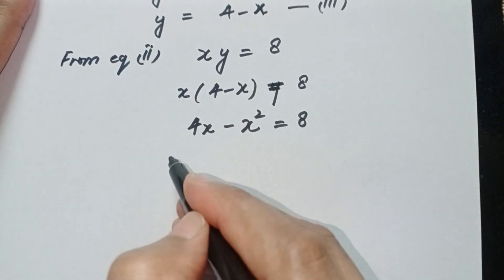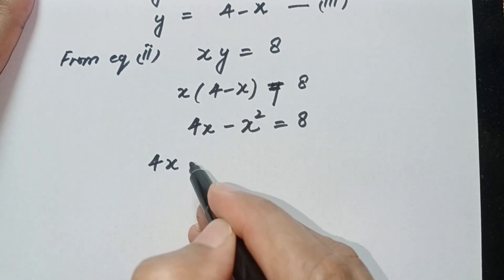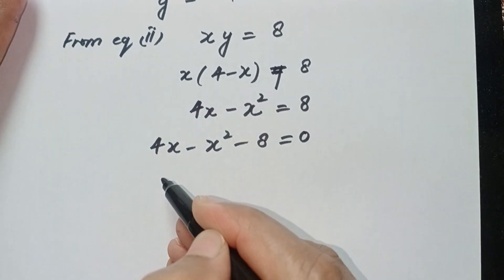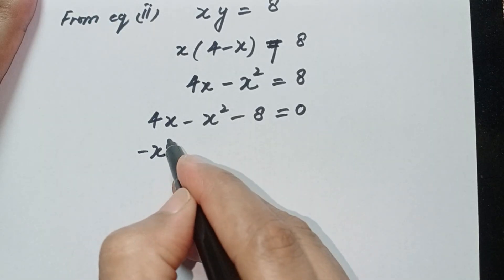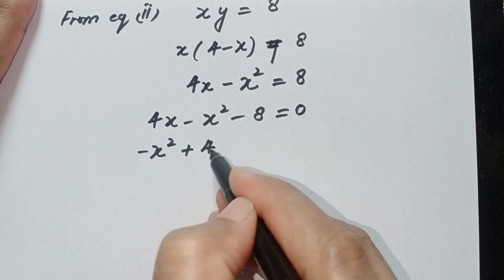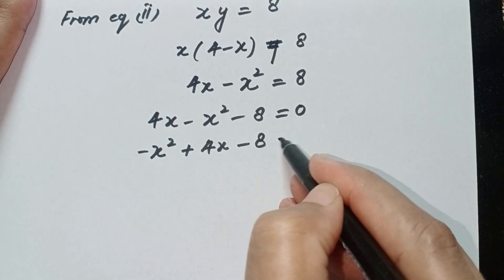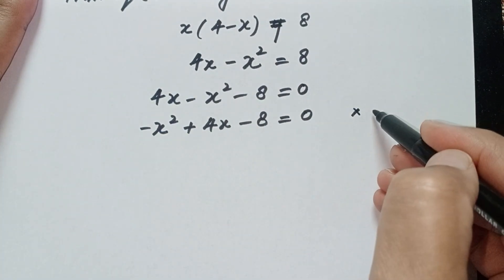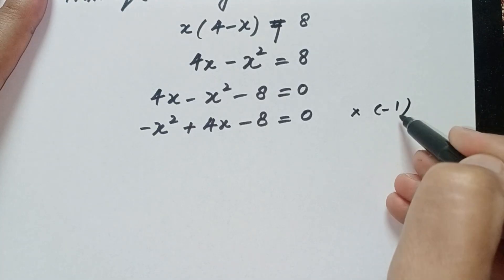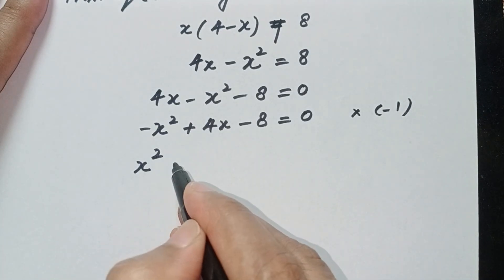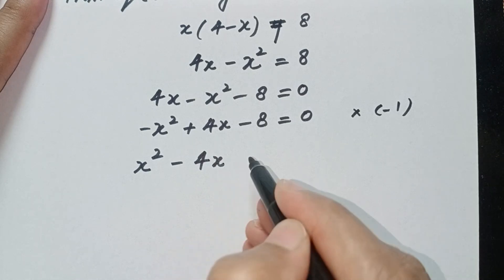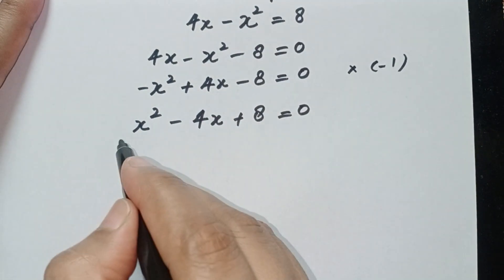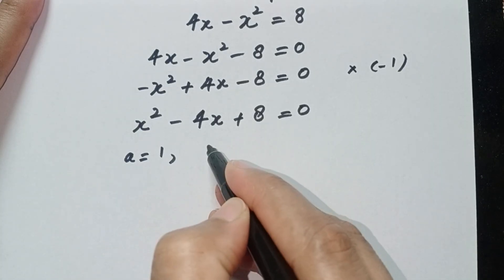Now bring this 8 to the left side: 4x minus x squared minus 8 is equal to 0. We can rearrange this as x squared minus 4x plus 8 is equal to 0, multiplying through by minus 1 on both sides. This is a quadratic equation.